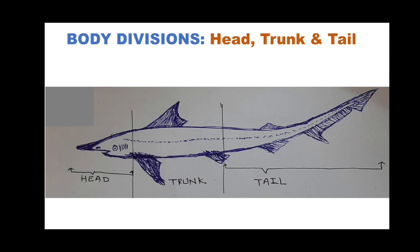Body divisions: the body of Scoliodon can be divided into head, trunk, and tail. However, there are no distinct boundaries between these three divisions — head, trunk, and tail are not completely separate; there is no neck present.